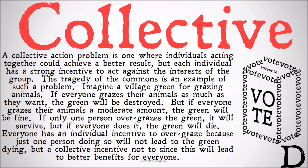But if everyone grazes their animals just a moderate amount, the green will survive and sustain the animals and the population. If only one person overgrazes, it'll be fine, because one family's animals aren't enough to kill the whole green. But if everyone overgrazes, the green will die. Everyone has an individual incentive to overgraze, but there's a collective incentive not to, since keeping the green alive leads to better benefits for everyone. The individual incentives are opposed to our collective incentives.